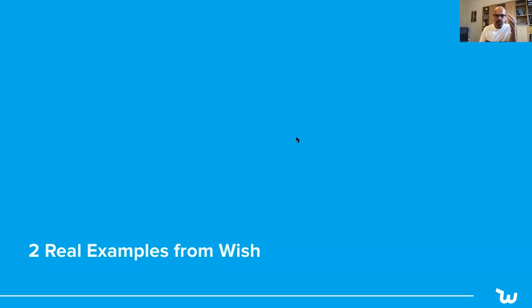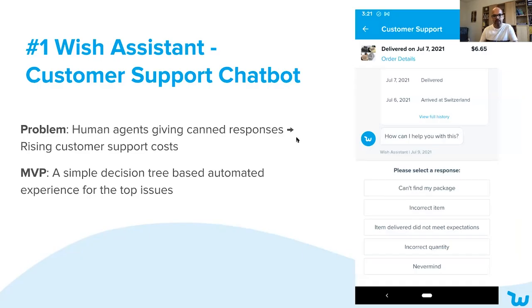Let me dive into a couple of examples from my days at Wish which will really illustrate and drive home the point. The first example I'm going to talk about is our customer support chatbot, which we call the Wish Assistant. This was something we launched — the MVP launched in late 2018.